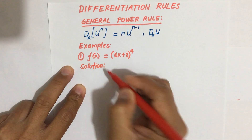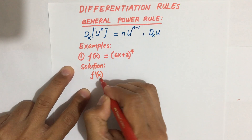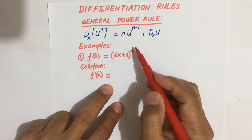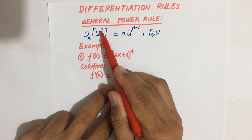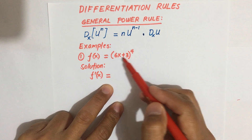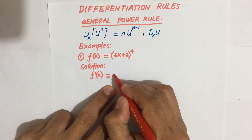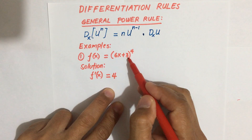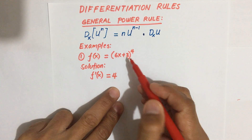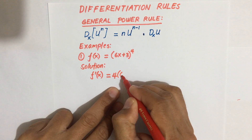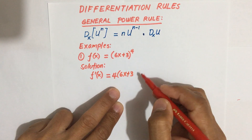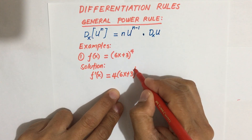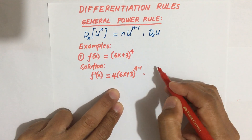For our solution, f prime of x — the power rule says you have to bring down the exponent. Our n is 4, so bring that exponent down and multiply it by u. Our u, which is the base, is 6x plus 3, raised to the power of n minus 1, which is 4 minus 1.